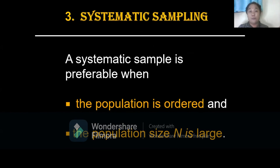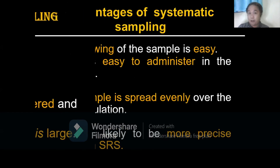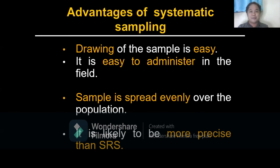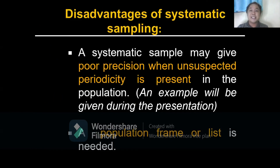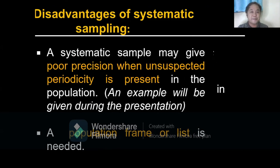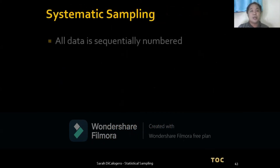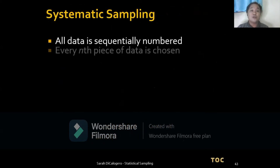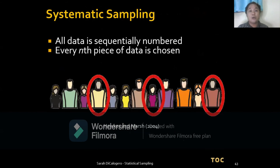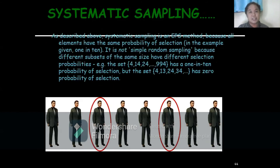The third probability sampling design is systematic sampling, which is preferable when the population is ordered and the population size is large. When to use it: if the ordering of the population is essentially random, if there is slight stratification in the population, and when stratification with numerous data is used. How to use systematic sampling: all data is sequentially numbered and every nth unit of data is chosen.